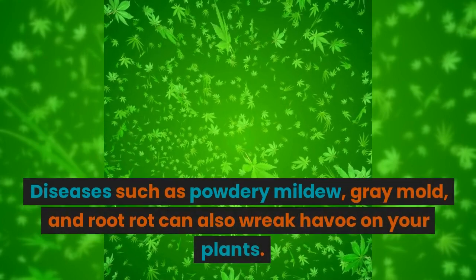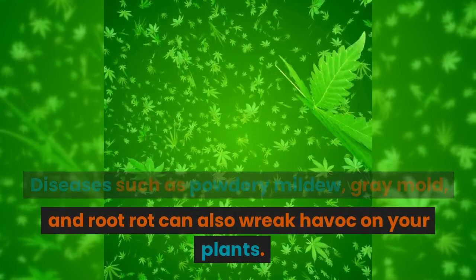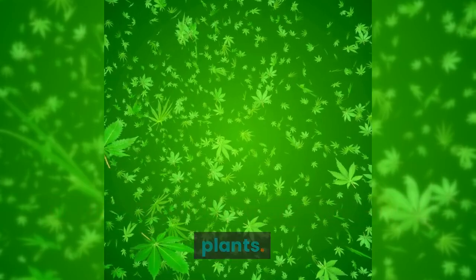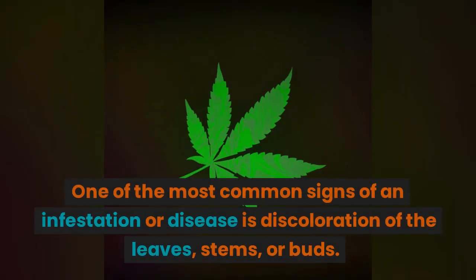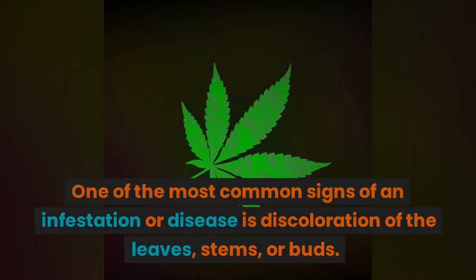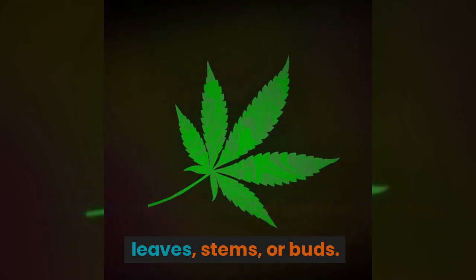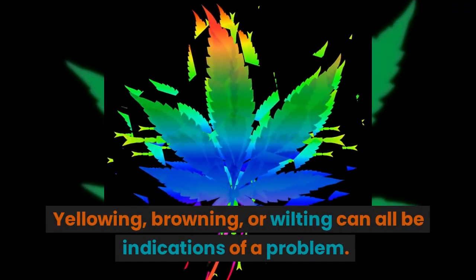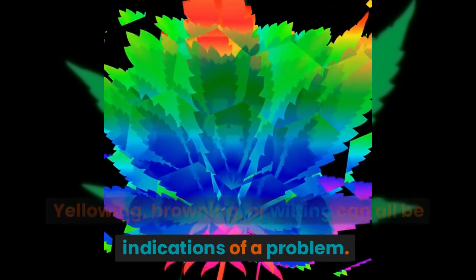Diseases such as powdery mildew, gray mold, and root rot can also wreak havoc on your plants. One of the most common signs of an infestation or disease is discoloration of the leaves, stems, or buds. Yellowing, browning, or wilting can all be indications of a problem.